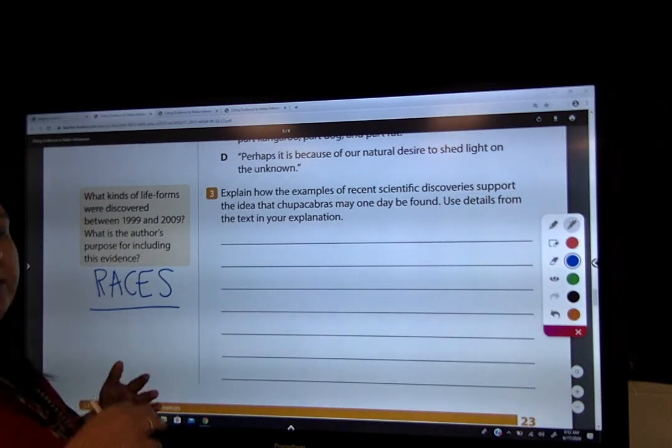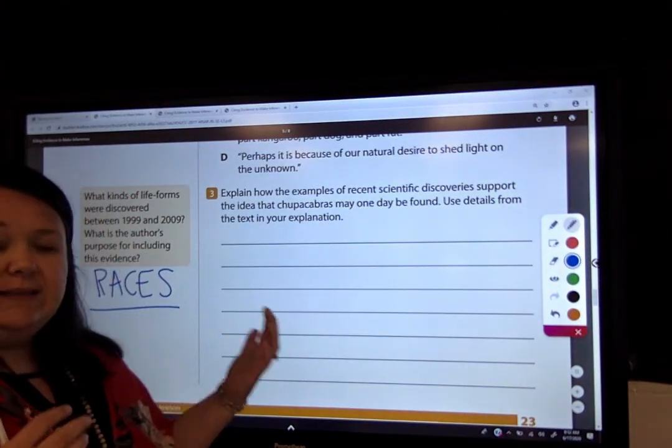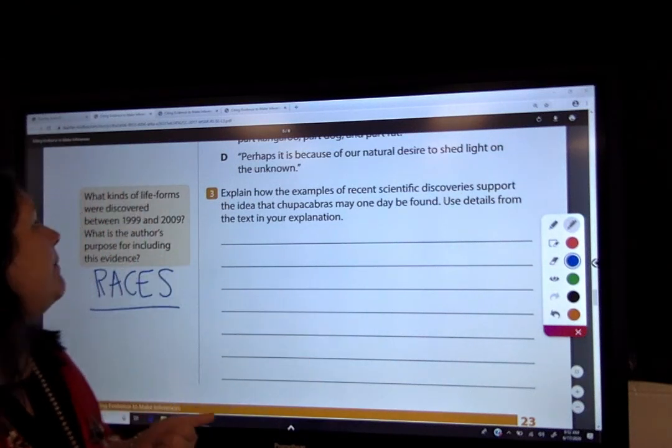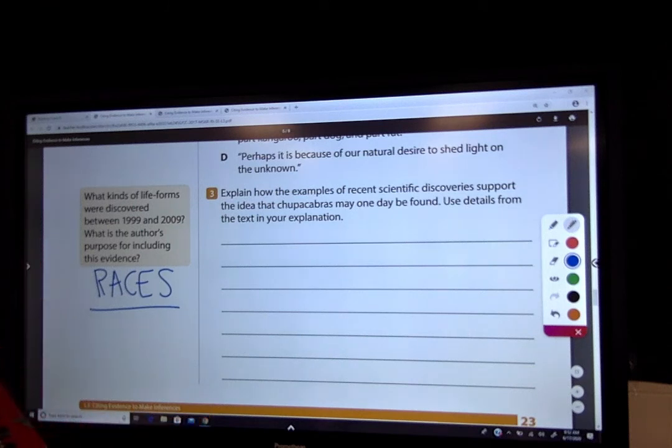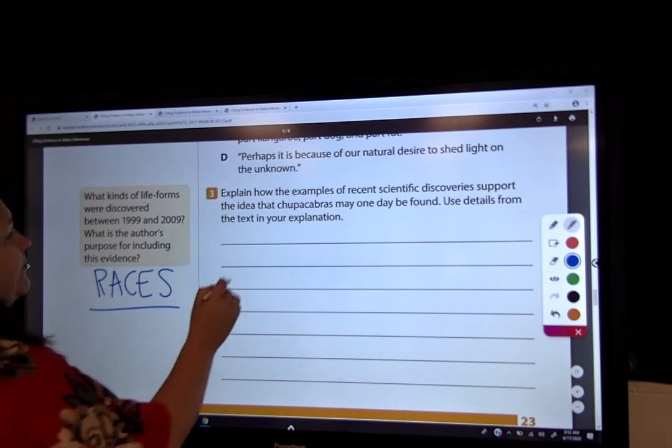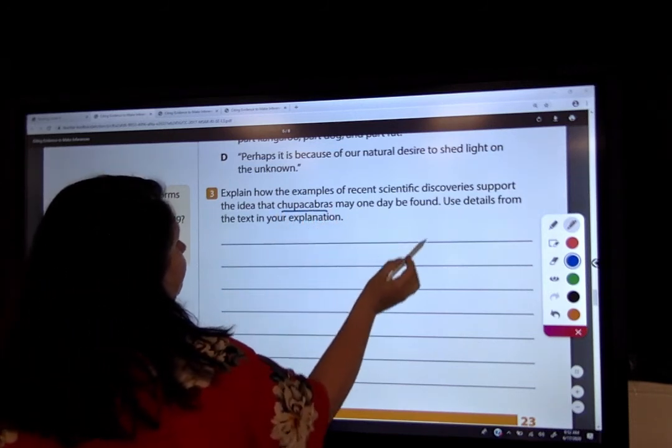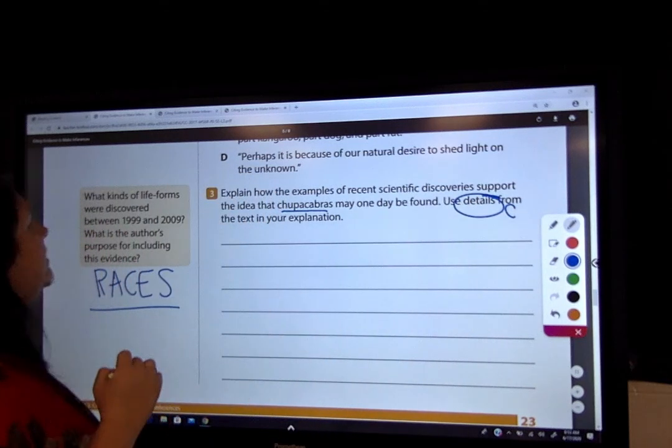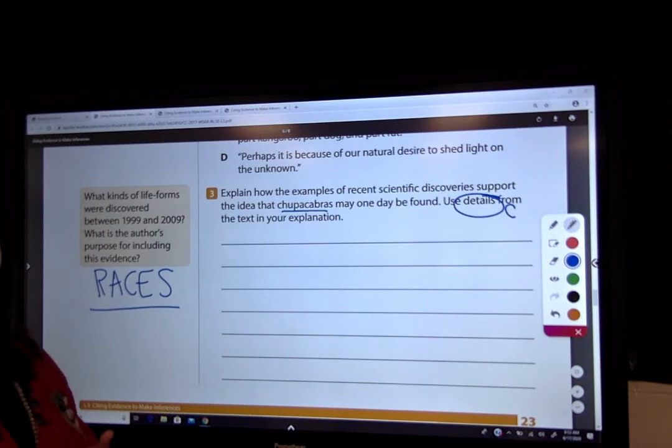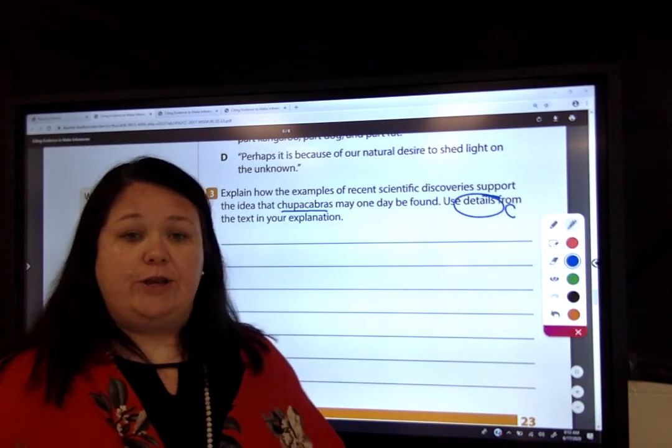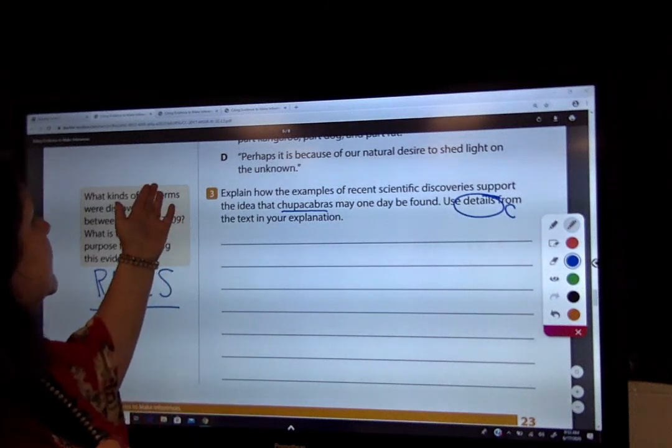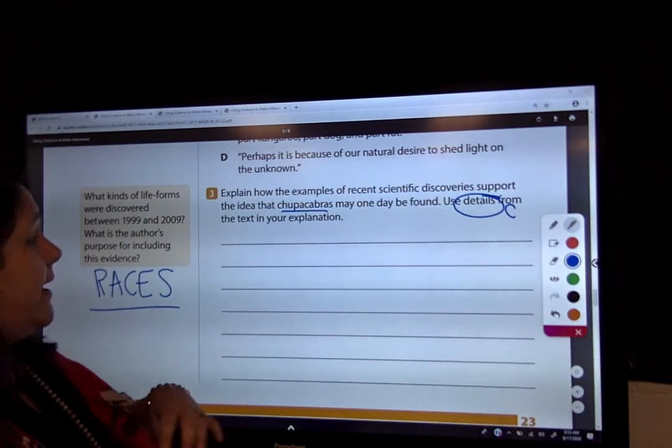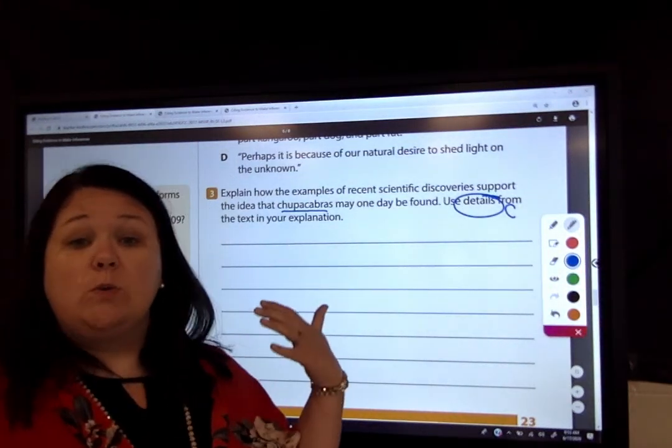So let's look, if you go back and look at our inferencing video, I'm using that same passage from the Tales of the Chupacabra to answer this question here. My question says, explain how the examples of recent scientific discoveries support the idea that chupacabras may one day be found. Use details. So that's going to be my C from the text in your explanation. So the first thing I want to do in answering this question, I have to know what it wants me to do. That's my question, that's what it's wanting me to respond to.